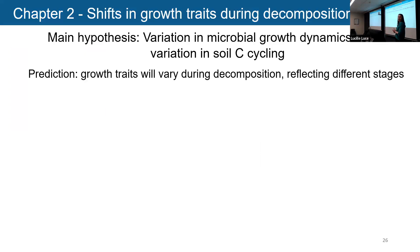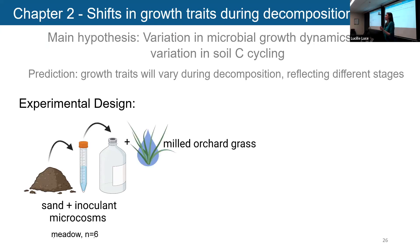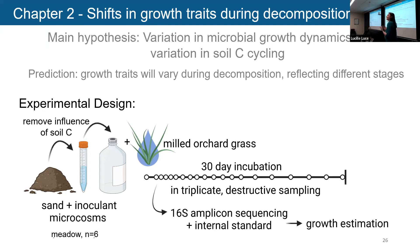On to chapter two, where I'm looking at how these growth metrics are changing over the decomposition process. My prediction is that growth traits will vary during decomposition, reflecting different stages. I used a similar experimental design, but one key difference is that I used sand microcosms that I inoculated with a soil microbial community and fed some grass material. The reason was to remove the influence of soil carbon and other confounding factors so I could focus just on the decomposition.